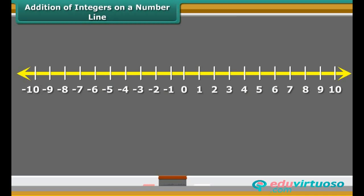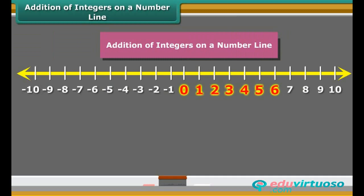Students, now we learn addition of two positive integers on a number line. If we add 6 and 4 on the number line, first we move 6 steps to the right from 0, reaching 6. And then, we move 4 more steps to the right of 6 and reach 10. Thus, we get 6 plus 4 is equal to 10.